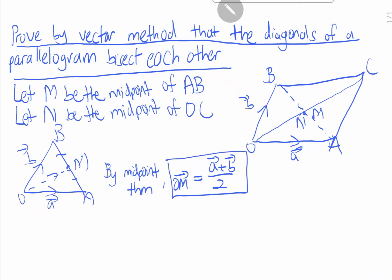So now we have found OM. And now let's do it for ON. So this is O, A, C, and this is point N. This is vector A.